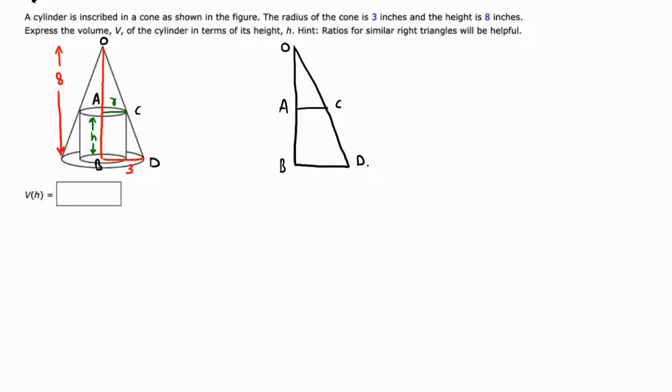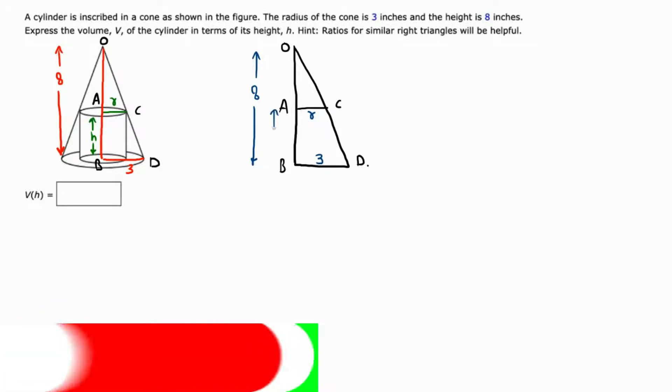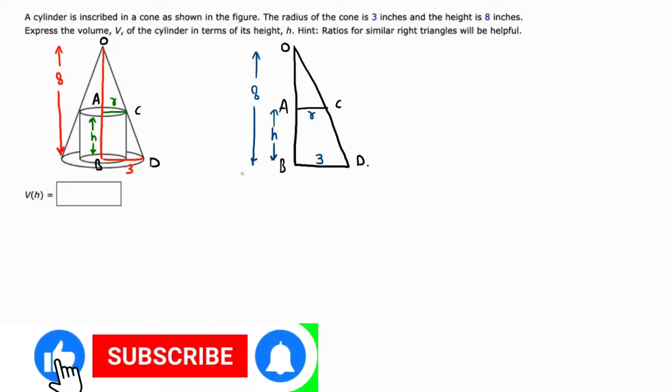We are given that AC is r, BD is 3, OB is 8, and AB is the height h of the cylinder.